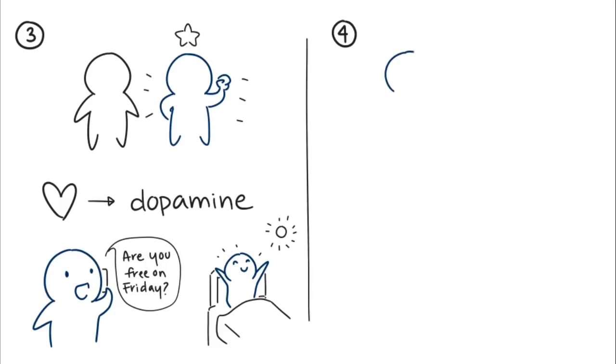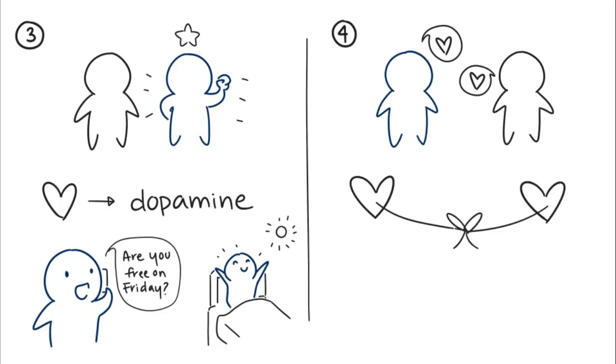Number four: Your partner returns the same feelings as you. You know that you like your partner and your partner likes you back. Although liking isn't as strong or equivalent to love, people have to like each other first before they fall in love. When you and your partner like each other, it encourages the both of you to form a deeper bond.